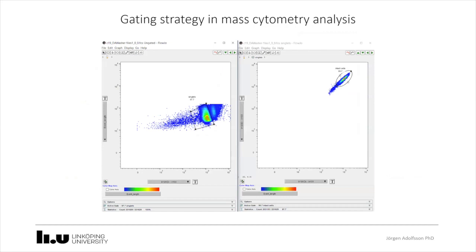In mass cytometry, there is no forward scatter. To gate our cells, we use a parameter called event length — that is, how long it takes for an event to pass through the detector. We also use iridium-191, which stains cells and allows us to identify doublets and triplets, single cells, and fragmented cell debris. Gating on single cells is then confirmed against iridium-193 versus iridium-191.